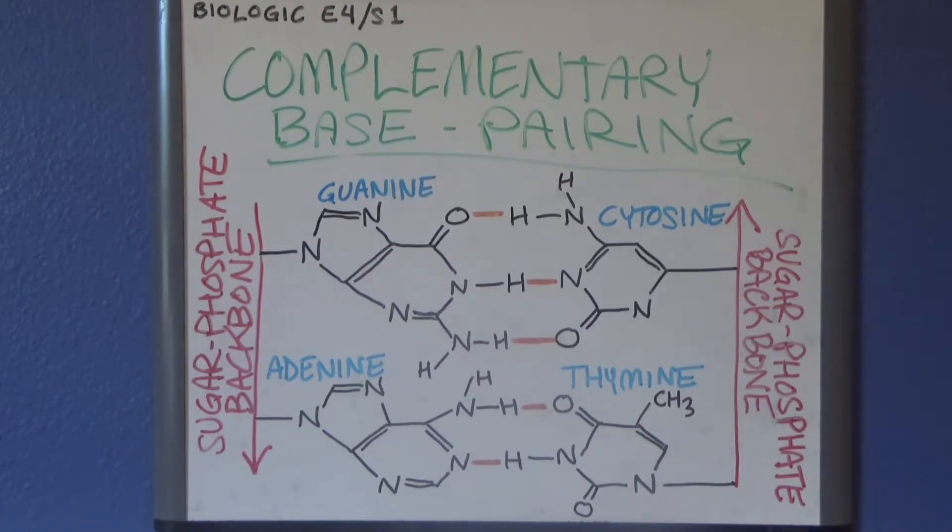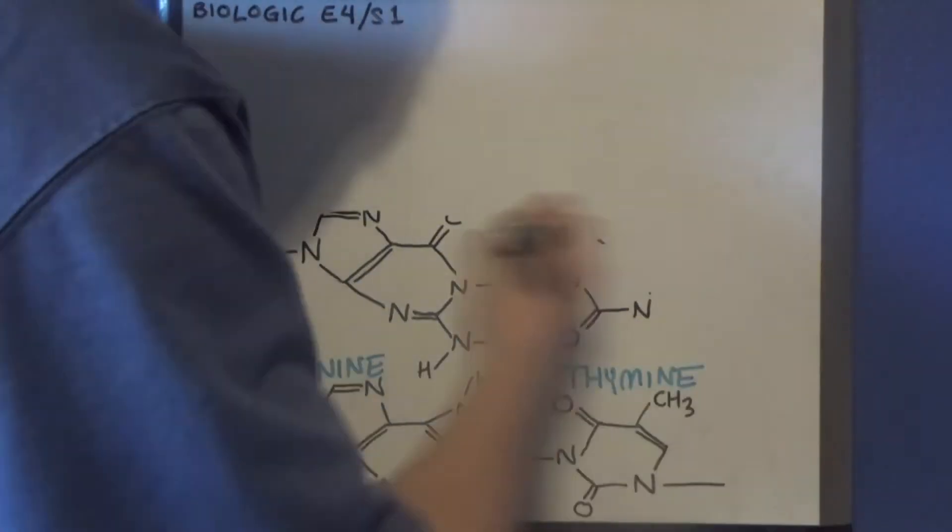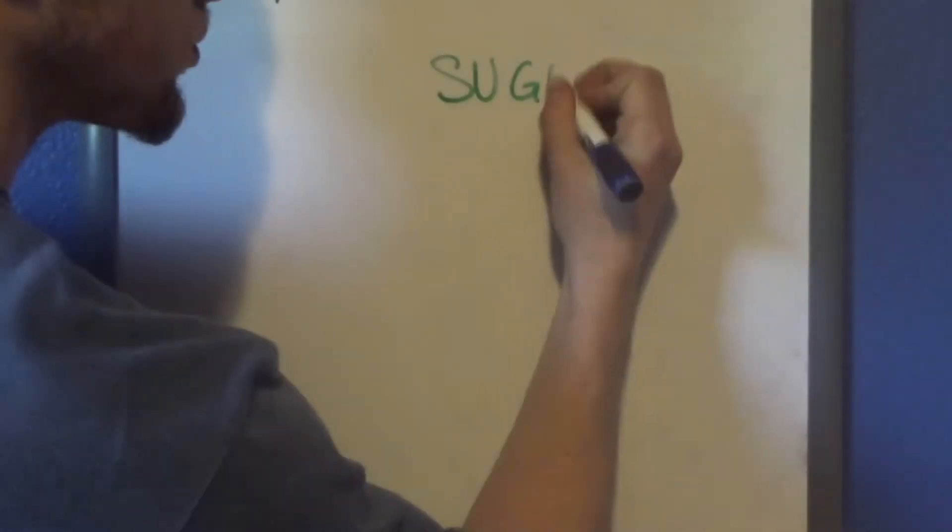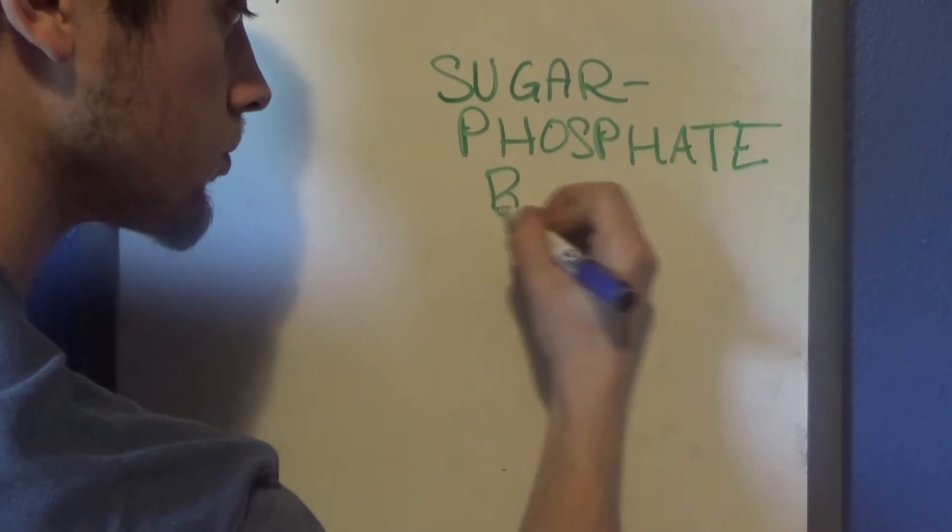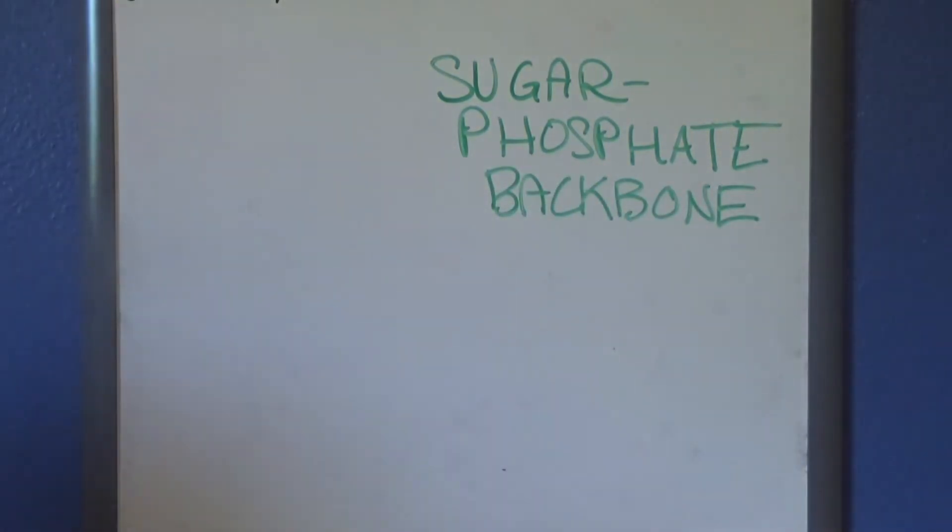So the nitrogenous bases, the subunits that identify the entire nucleotide, are the parts that are involved in information storage via coding, and they're also responsible for holding the two DNA strands together with their hydrogen bonds. The other two subunits of the nucleotide, the 5-carbon sugar base and the phosphate group, they bind together to compose the backbone of the nucleic acid.